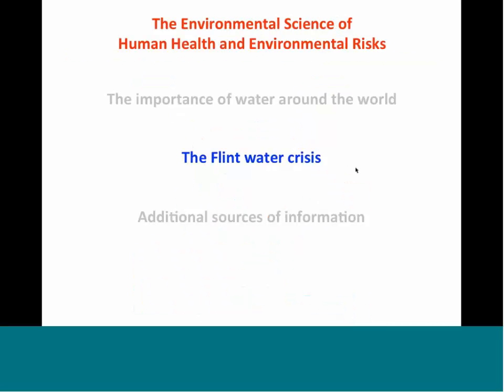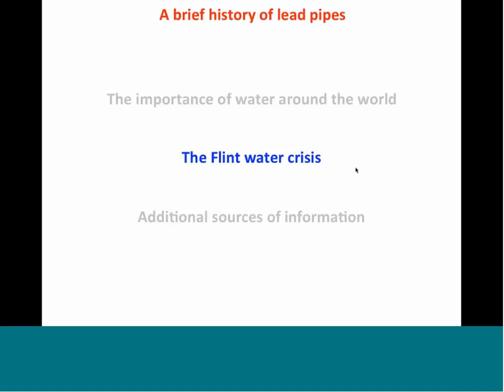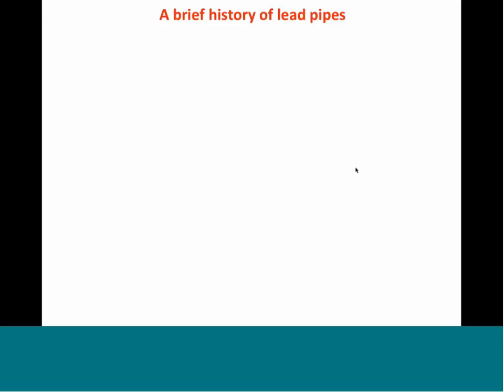That brings us to the Flint water crisis. Most of you have probably heard bits and pieces of this. I want to talk about how this unfolded because it's a great teaching moment for students to understand why they should care about environmental science, why they should care about human health and environmental risk — a great segue into topics that your students can probably understand quite well.